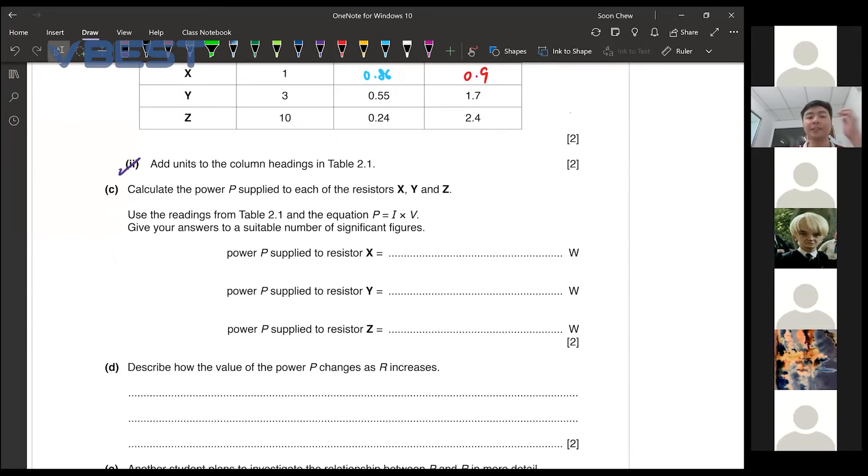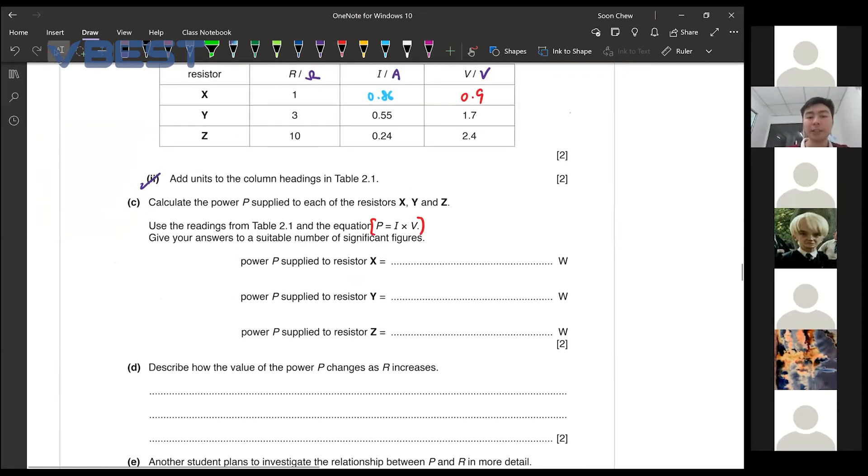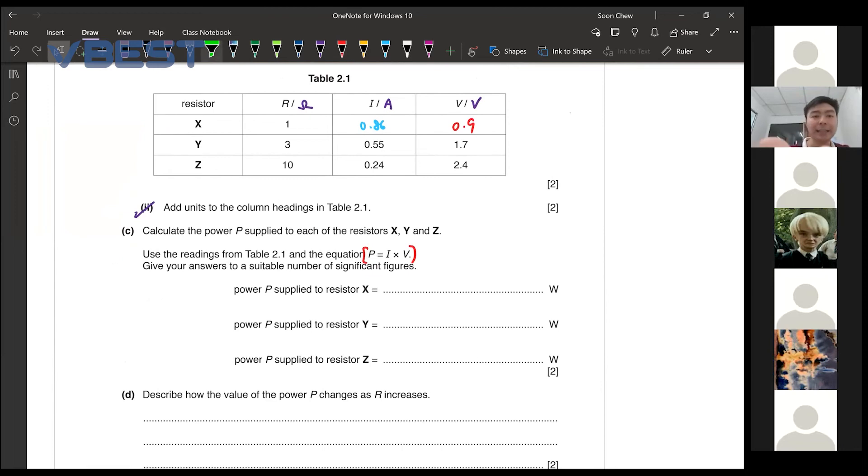Then part C. Calculate the power supplied to each of the resistors X, Y, and Z. The formula is given to you. So we just need to calculate and then want us to give the answer in the suitable number of significant figure. Now we just calculate first. Then we multiply the current and the voltage.